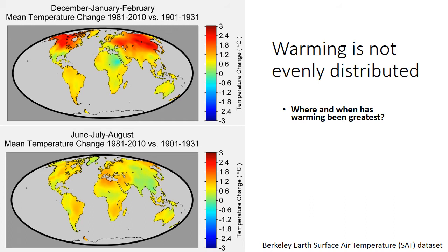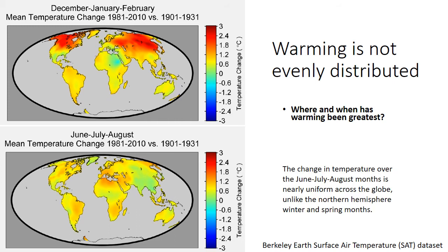As global temperature increases, we expect all places to start experiencing warmer temperatures. However, it's important to realize that warming is not evenly distributed across terrestrial systems. Looking at changes in average temperature from the period 1901–1931 versus 1981–2010, the change depends on your location. The main trend is that we see the greatest warming at higher latitudes in the northern hemisphere, so places like the Arctic have experienced much more warming than other locations on the planet.